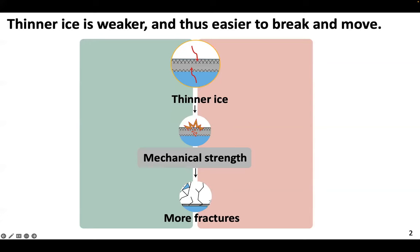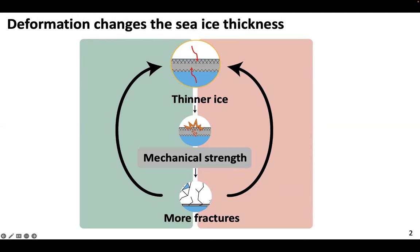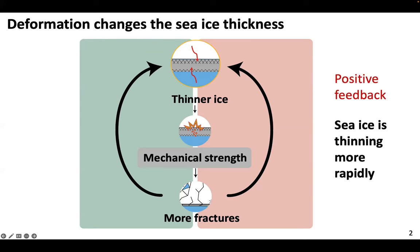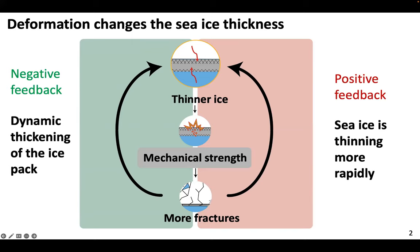This schematic illustrates the relationship between thinner ice that we have now in the Arctic and the deformation processes. Simplified: ice thickness determines the mechanical strength of the ice, so thinner ice is easier to break and move, and therefore it is expected to experience more deformation events, leading to a more fractured ice pack. However, those deformation events themselves also have an effect on ice thickness — a more fractured ice pack can lead to more rapid ice thinning especially in summer, but increased deformation events can also dynamically increase ice thickness.